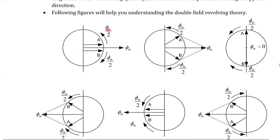At one position, φm by 2 is rotating in one direction and the other component in the opposite direction. At this position, the resultant magnetic flux is φm by 2 plus φm by 2, giving a total of φm. This resultant φm rotates in the counter-clockwise direction.